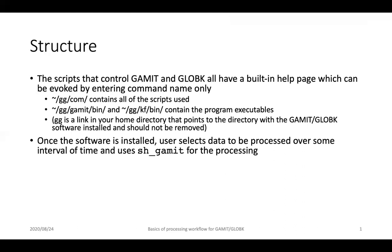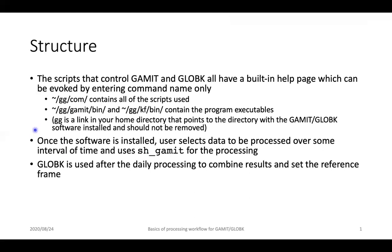Once the software is installed, you will choose the data you want processed over some interval of time, set up the processing strategy with some files which we'll cover in more detail in a later webinar, and then use the program SH_GAMIT to do the processing. GLOBK is then used after daily processing to combine results and create time series, velocities, and reference frame changes. GAMIT does the phase and pseudorange data processing, while GLOBK takes GAMIT's output and creates a geodetic solution — time series and velocities in a chosen reference frame.